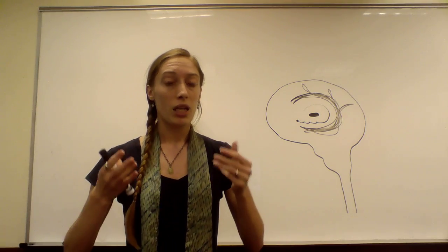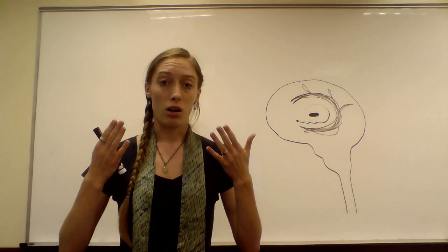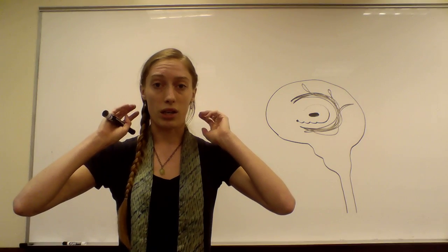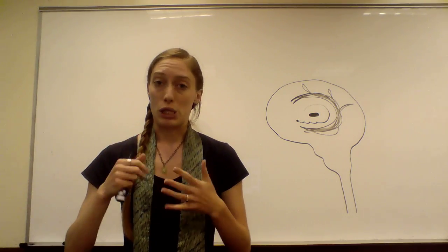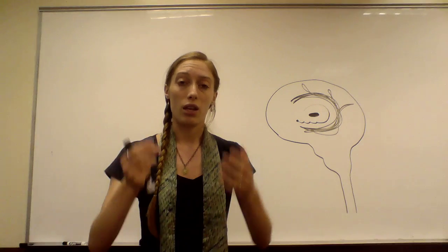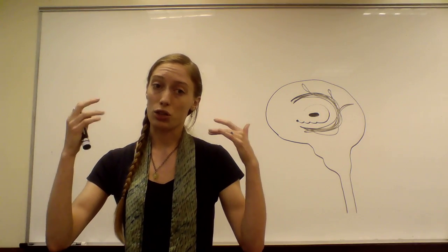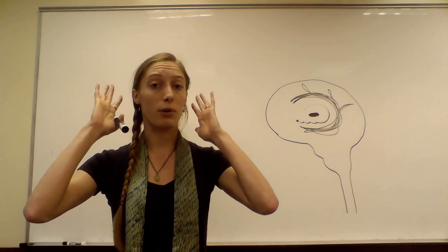What he did in his experiment was he blocked visual and auditory sensory information so that the person couldn't see or hear anything. And then he used electrodes to provide electrical stimulation to both hemispheres of the brain.